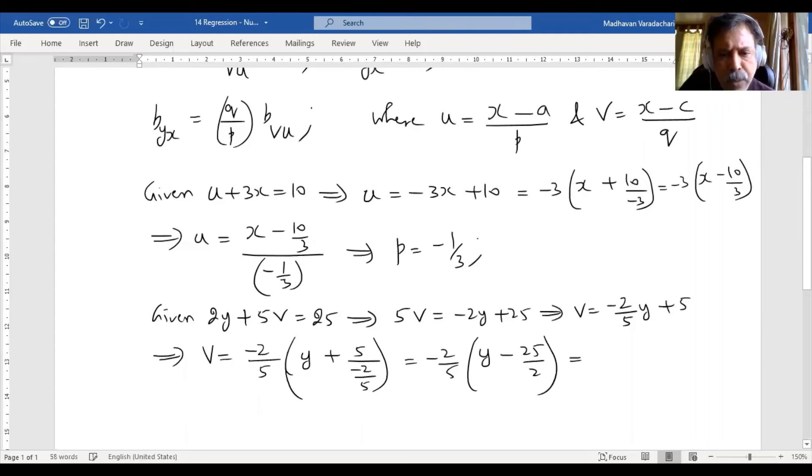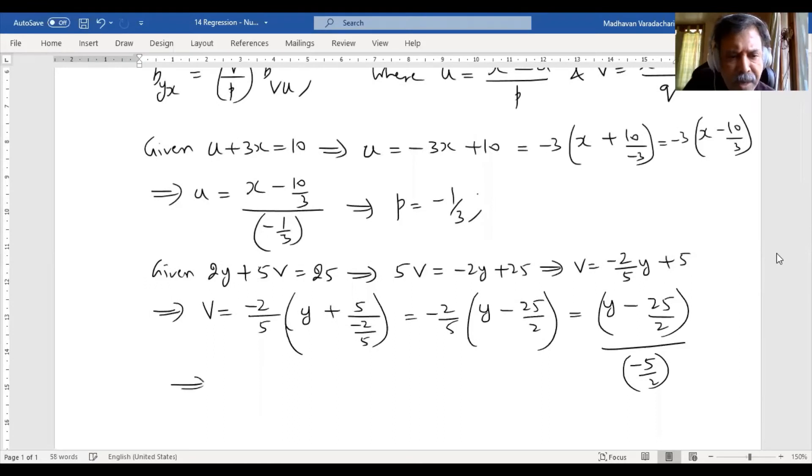Again, I should take this negative 2 by 5 to the denominator. I should take it to the denominator as the reciprocal of the same number, means it will become minus 5 by 2. From this I can say our q value, this implies that our q value is negative 5 by 2.